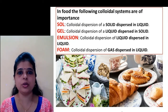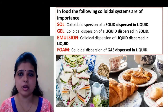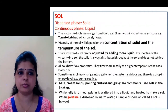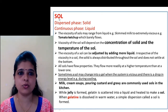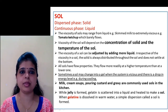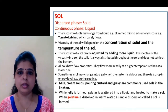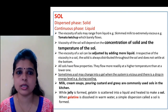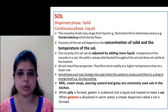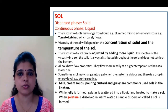When you talk about the food colloidal system in food, these are generally of four types: sol, gel, emulsion, and foam. In sol, the dispersed phase is solid and the continuous phase is liquid — think SO for solid dispersed in L for liquid phase. The viscosity of sol may range from liquid, for example skimmed milk, to extremely viscous, for example tomato ketchup. A good example of sol is tomato ketchup. The viscosity of sol generally depends on the concentration of the solids and temperature of the sol.